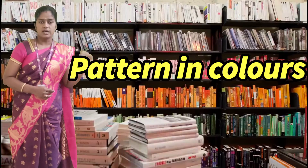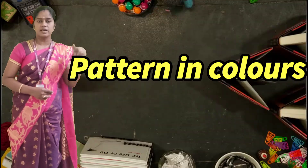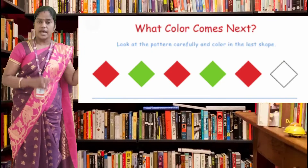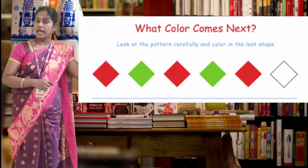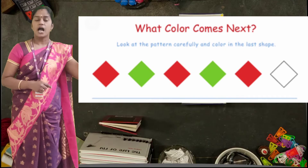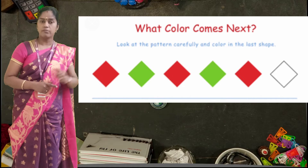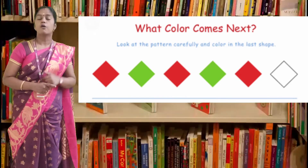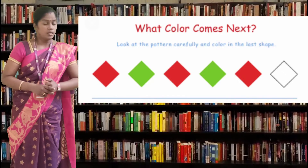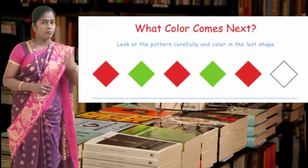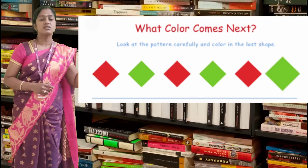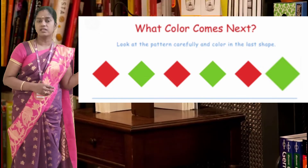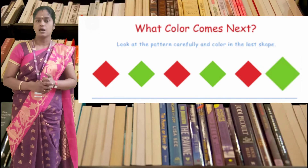Next, let's see patterns in colors. Look at the picture — a red diamond, then a green diamond, again a red diamond, next a green diamond, then a red diamond. What comes next, children? What color comes in the diamond? Yes — it is green. Now do you understand how a pattern is created in colors?